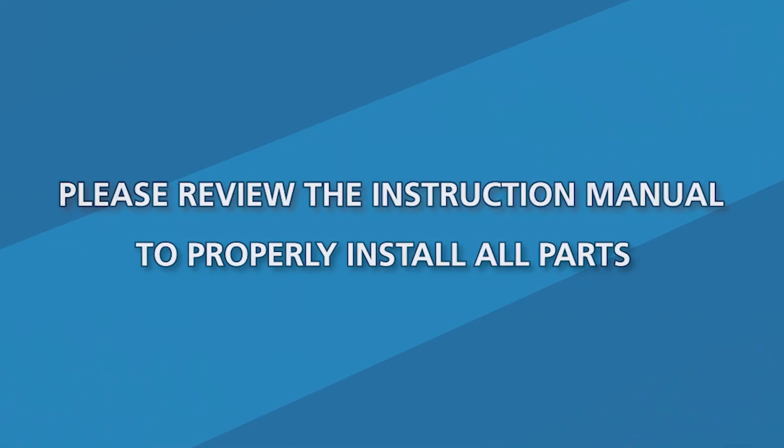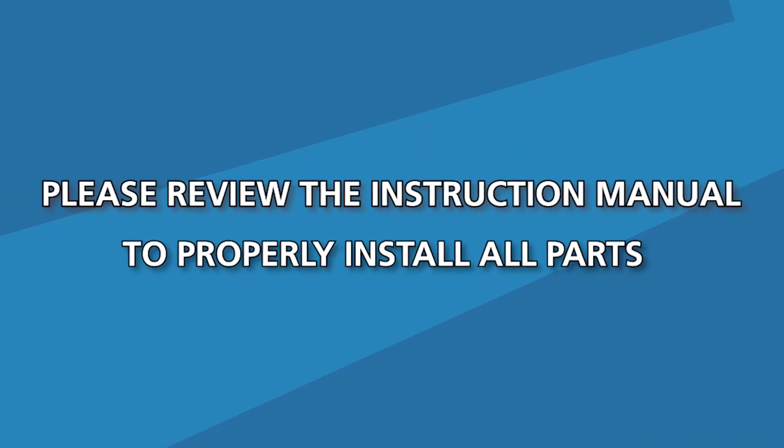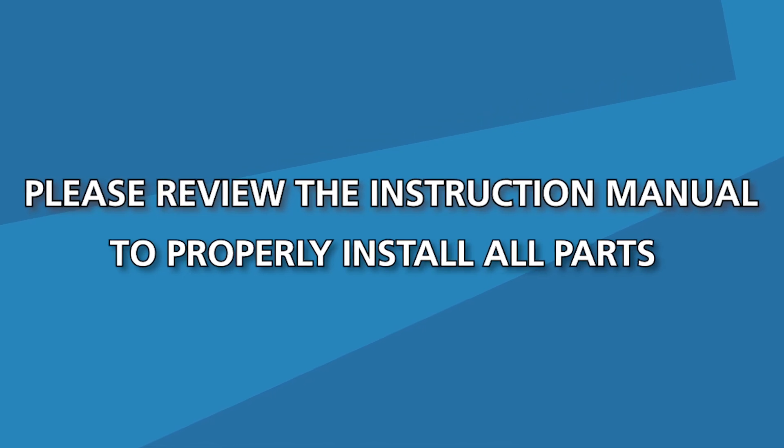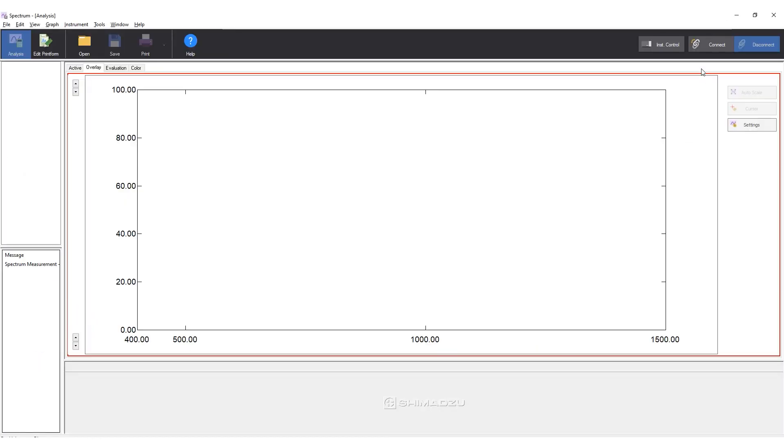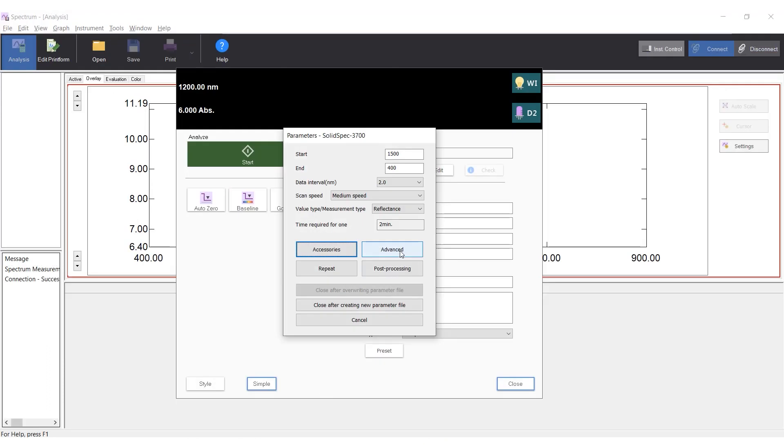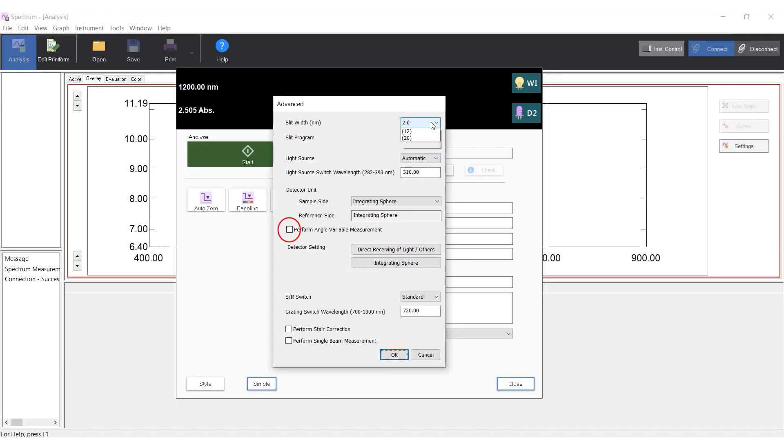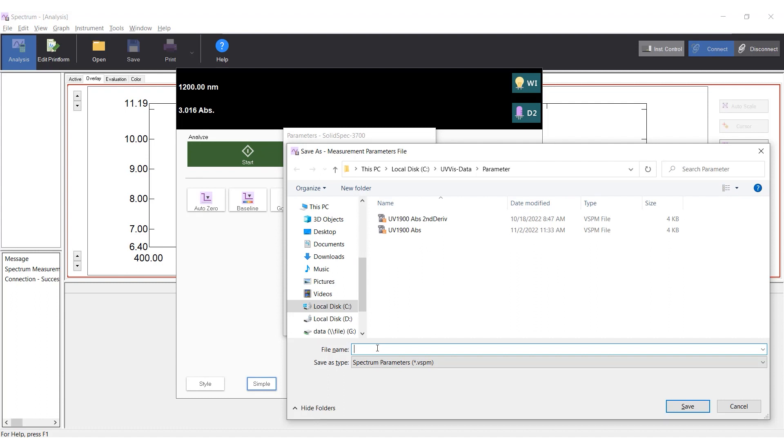Before using the VASR attachment, review the instruction manual to properly install all parts. Launch LabSolutions UV-Vis software. Make sure to select Perform Angle Variable Measurement in the Advanced section. Set up a parameter file for reflectance measurement and save it.